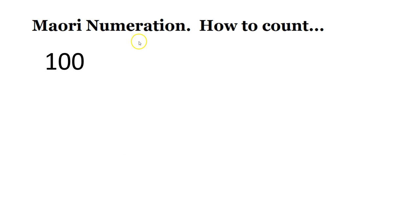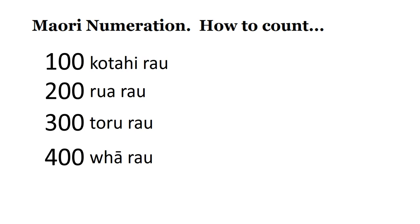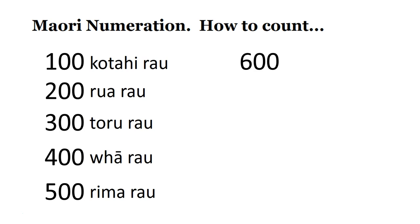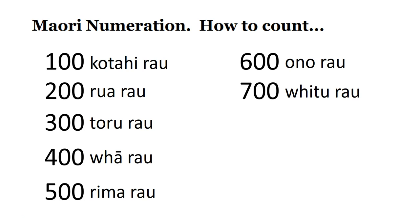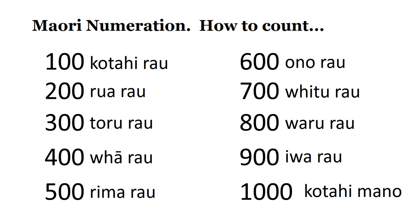Let's go through a bit of practice. 100 — kotahi rau. 200 — rua rau. 300 — toru rau. 400 — whā rau. 500 — rima rau. 600 — ono rau. 700 — fitu rau. 800 — waru rau. 900 — iwa rau. And 1000 — kotahi mano.